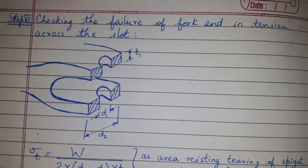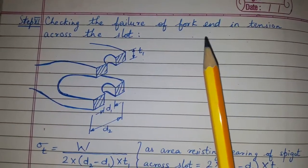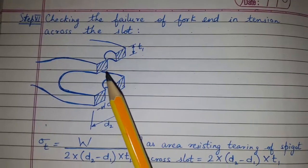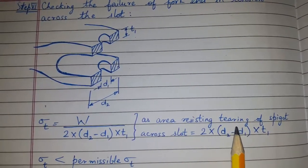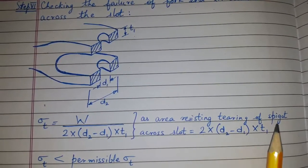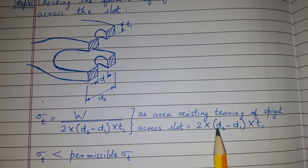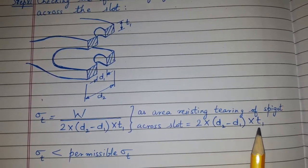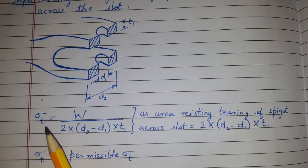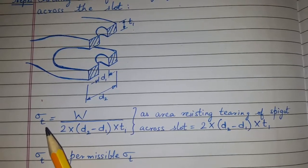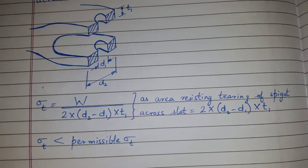Step 6: now for the double eye — checking the failure of fork end in tension across the slot. We find the area resisting the tearing of the fork across the slot, which is 2 × (d2 − d1) × t1. We find the tensile stress and check whether it is less than the permissible tensile stress.